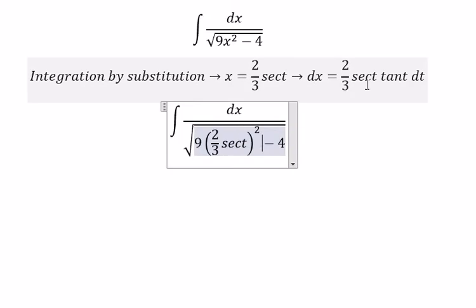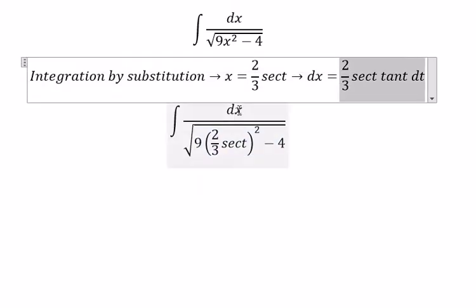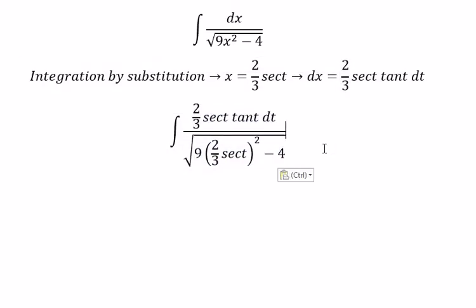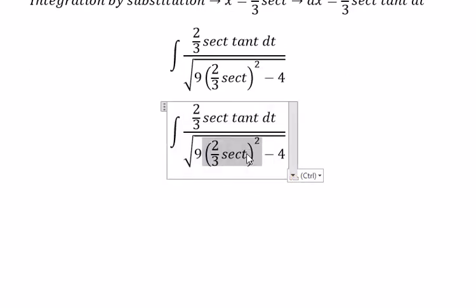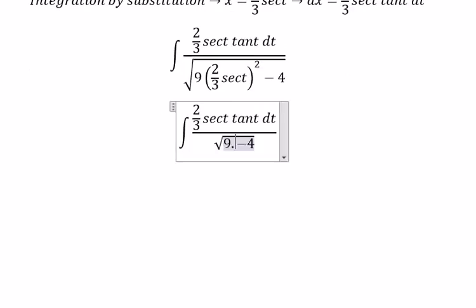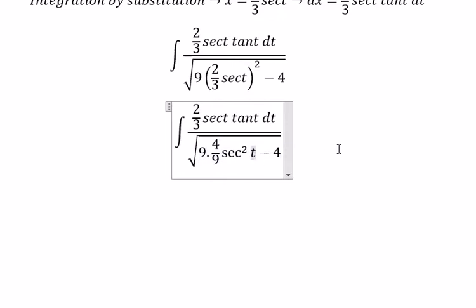We put x in here. This becomes 4 over 9 sec t squared. And this one becomes 4.